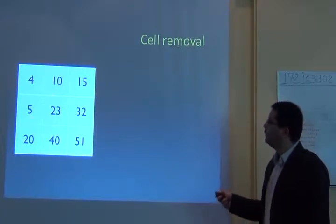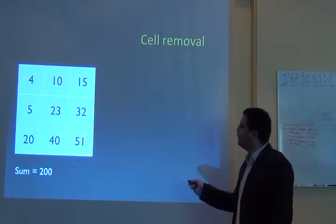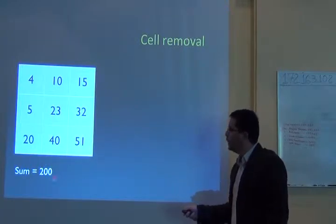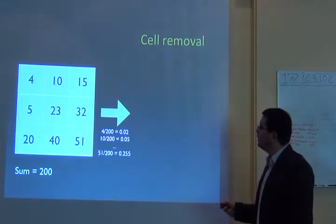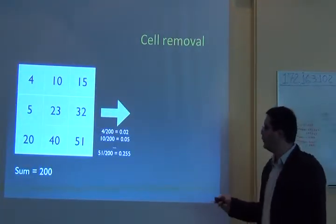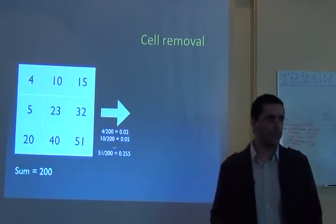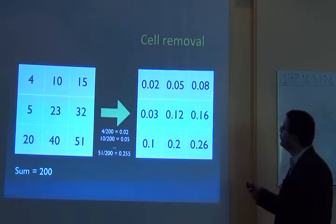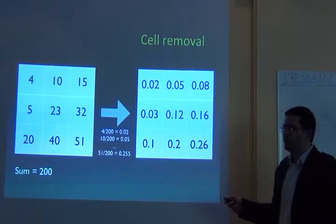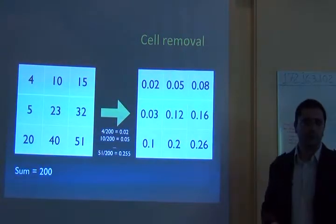You calculate the marginal value of the cell. If you sum up all these values, you have 200 individuals. So the relative importance of that cell would be 4 over 200 — it contributes 2% of the total number of individuals in the system. The cells contribute 2%, 5%, and 26% respectively — this is the relative importance of each cell to the whole system of cells, which is the marginal value.